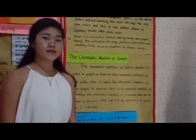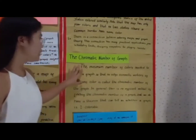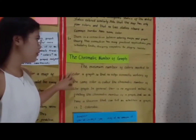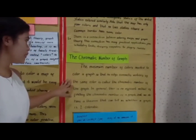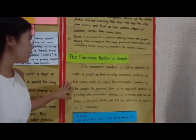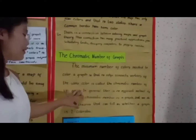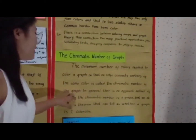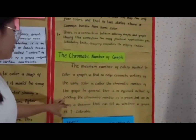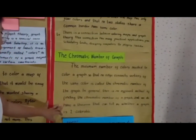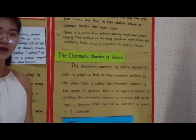We will now discuss the chromatic number of a graph. The minimum number of colors needed to color a graph so that no edge connects vertices of the same color is called the chromatic number of the graph. In general, there is no efficient method of finding the chromatic number of a graph, but we do have a theorem that can tell us whether a graph is two-colorable.